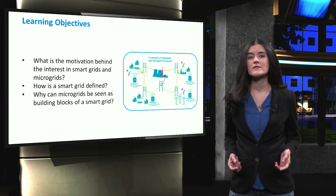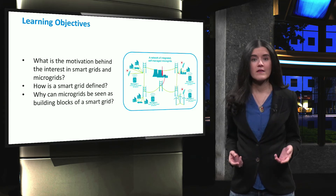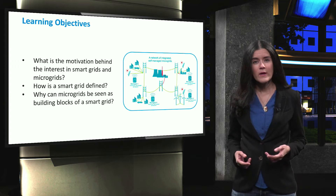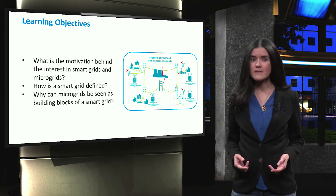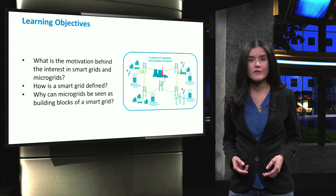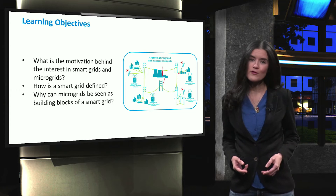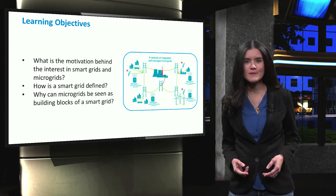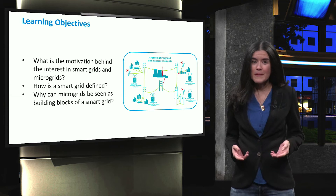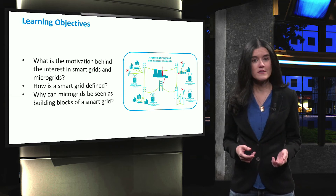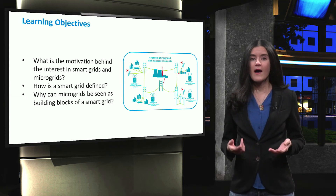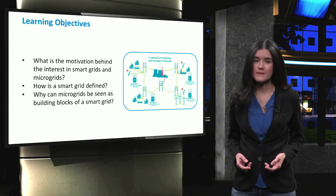Among the reasons behind the increasing interest in smart grids and microgrids, we can find the evolution of new technologies, such as power electronics devices, electric vehicles and of course PV systems. The integration of these technologies is expected to positively affect efficiency, environmental impact and economic performance of the power system.